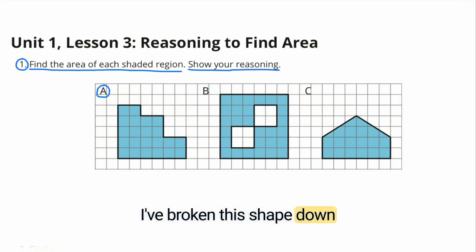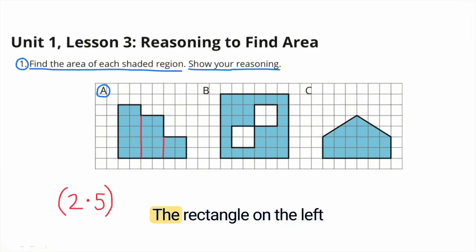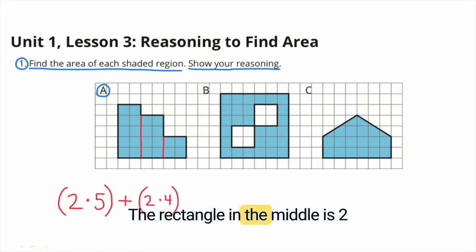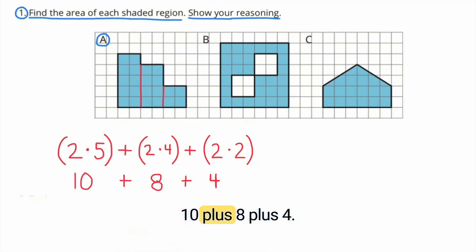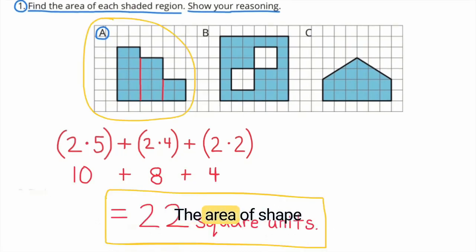A. I've broken this shape down into three different shapes. The rectangle on the left is 2 units wide by 5 units tall. The rectangle in the middle is 2 units wide by 4 units tall. And the square on the right side is 2 units wide by 2 units tall. 10 plus 8 plus 4. The area of shape A is 22 square units.